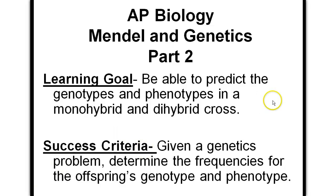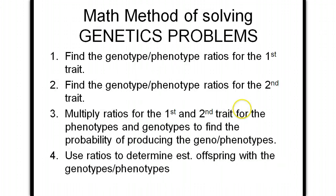AP Biology Mendel and Genetics Part 2. In this lesson, you're going to be using the math method to predict the genotypes and phenotypes in a dihybrid cross. You're also going to be using the chi-square test to find out if the results of a genetics experiment are valid. The math method of solving genetics problems is easier and faster than the Punnett square, but it does have some rules involved.